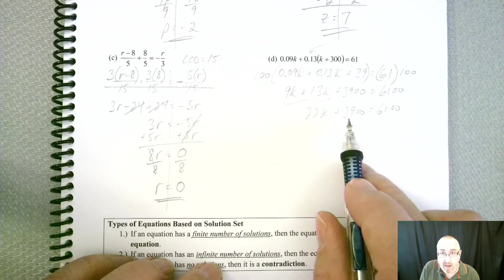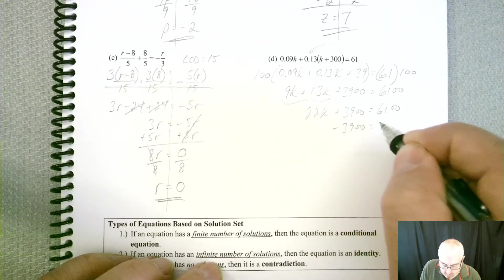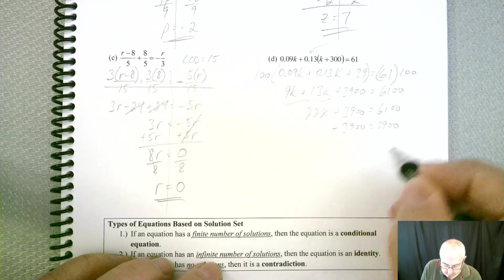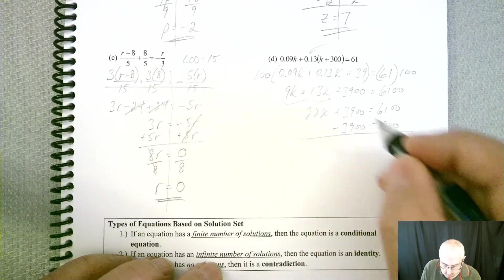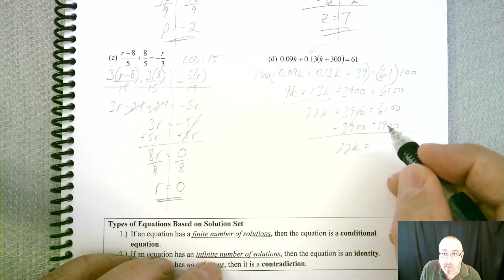So get rid of the adding and subtracting first. So we want to subtract, and then 6,100 minus 3,900.